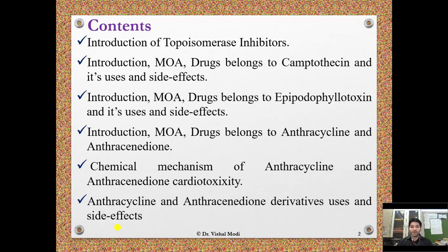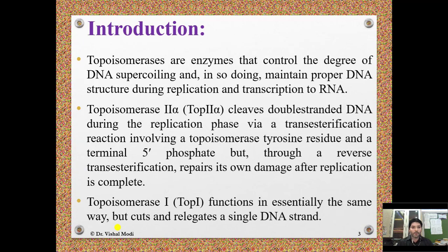Introduction: Topoisomerases are enzymes that control the degree of DNA supercoiling, maintaining proper DNA structure during replication and transcription to RNA. Topoisomerase 2 alpha cleaves double-stranded DNA during the replication phase via a transesterification reaction involving a topoisomerase tyrosine residue and a terminal phosphate.